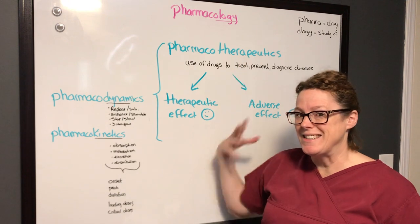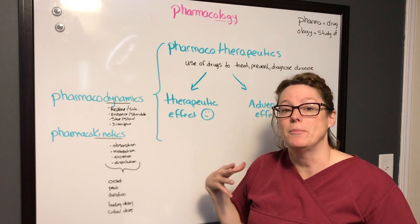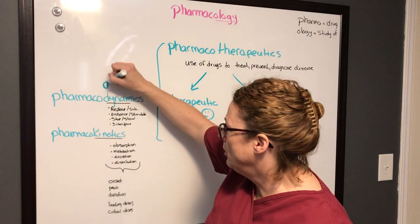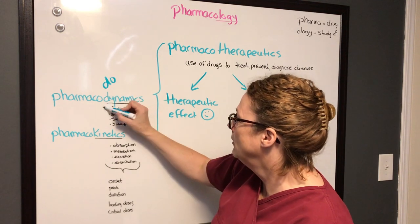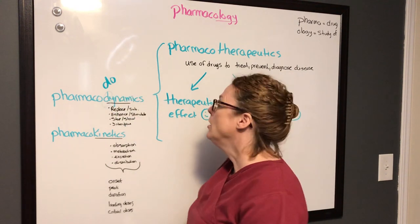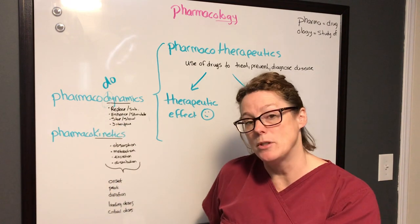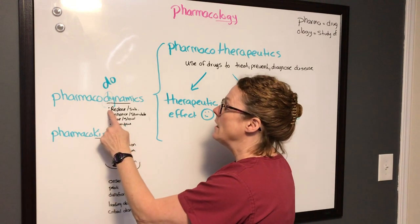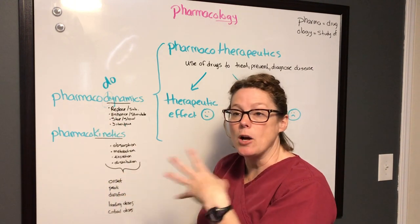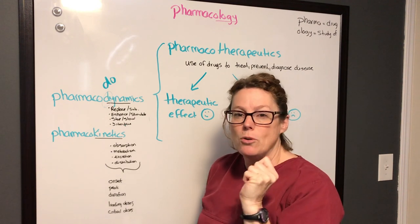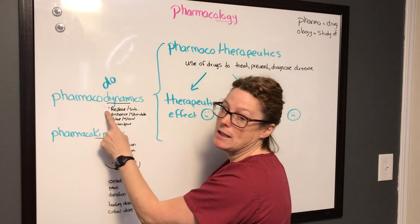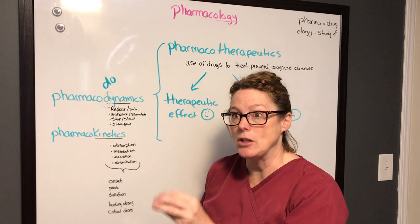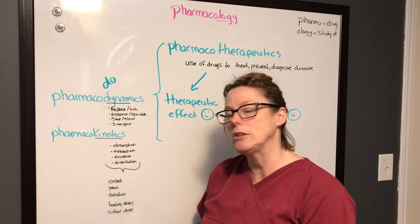Pharmacotherapeutics takes into consideration two other classifications of drug studies. We have pharmacodynamics — think of the D in dynamics — what do my drugs do? So are they in the body to replace or substitute for something not in sufficient volume? An example would be an antidepressant, where our body's not making enough of the happy hormones and the antidepressant comes in to replace and substitute. Or is it an enhancement or stimulation of something that's gotten a little lazy?